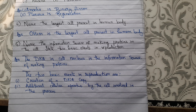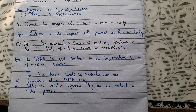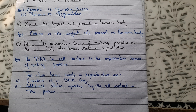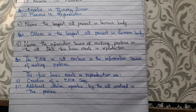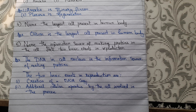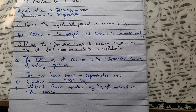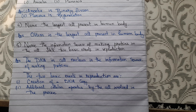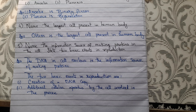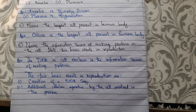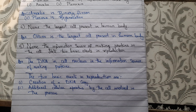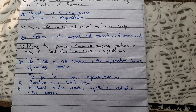The third question is: mention the mode of reproduction used by amoeba and planaria. Amoeba reproduces through binary fission, whereas planaria reproduces through regeneration. The fourth question is: name the largest cell present in the human body. Ovum is the largest cell present in the human body.